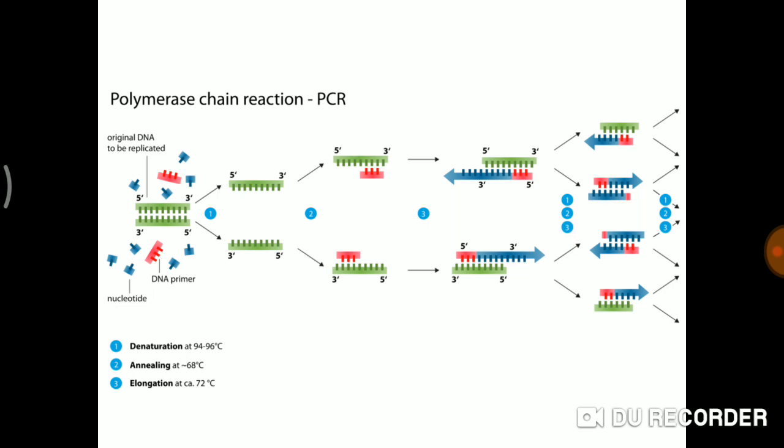The denaturation is normally at 94–96 degrees and the two strands get separated. Then you can see in red color the primer — the primer has attached, that is annealing. After that, the third step is elongation. You can see one arrow on the left side and one arrow on the right side — that is extension — and DNA polymerase binds to the red-colored primer.